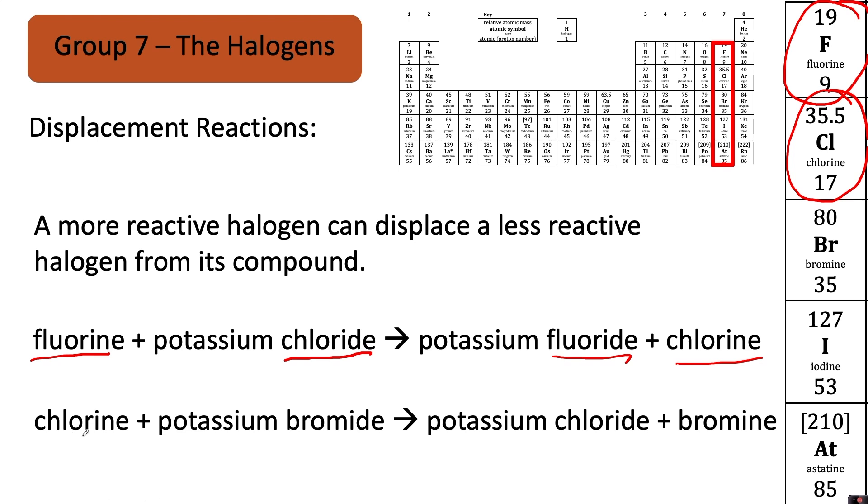In the second displacement reaction you can see chlorine is more reactive than bromine because it is higher than bromine in the halogen group seven. So chlorine when that reacts with potassium bromide would make potassium chloride and bromine so the bromine is displaced and kicked out by the chlorine.